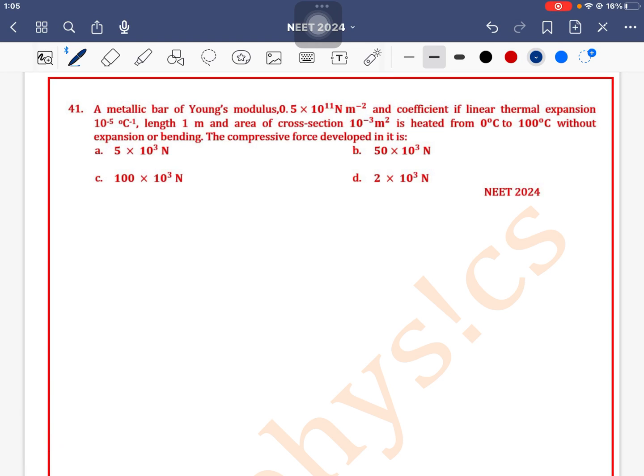A metallic bar of Young's modulus Y = 0.5 × 10^11 N/m² and coefficient of linear thermal expansion 10^-5 per °C, of length 1 meter and area of cross section 10^-3 m², is heated from 0°C